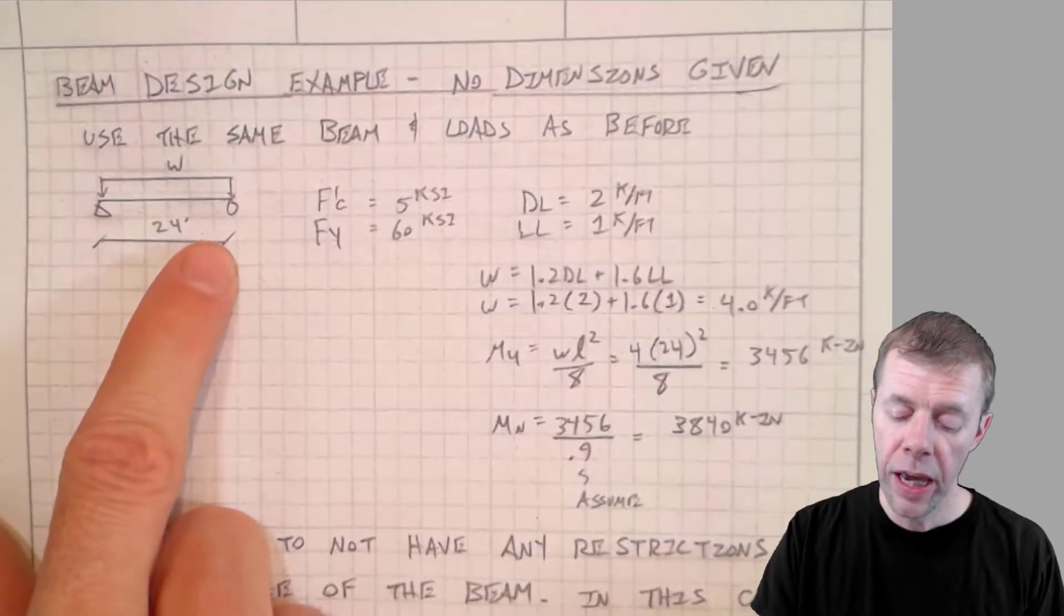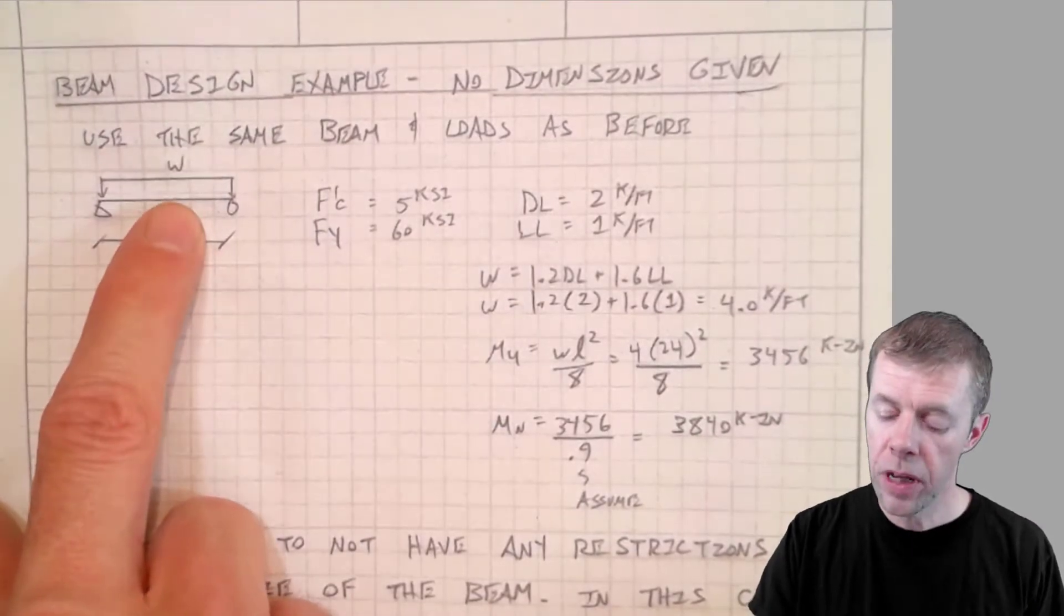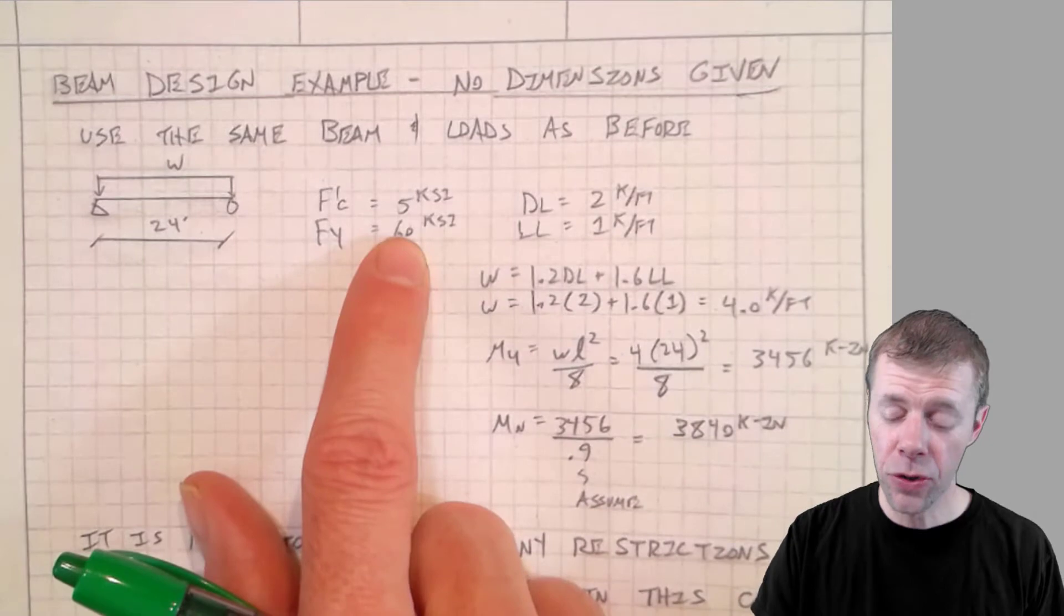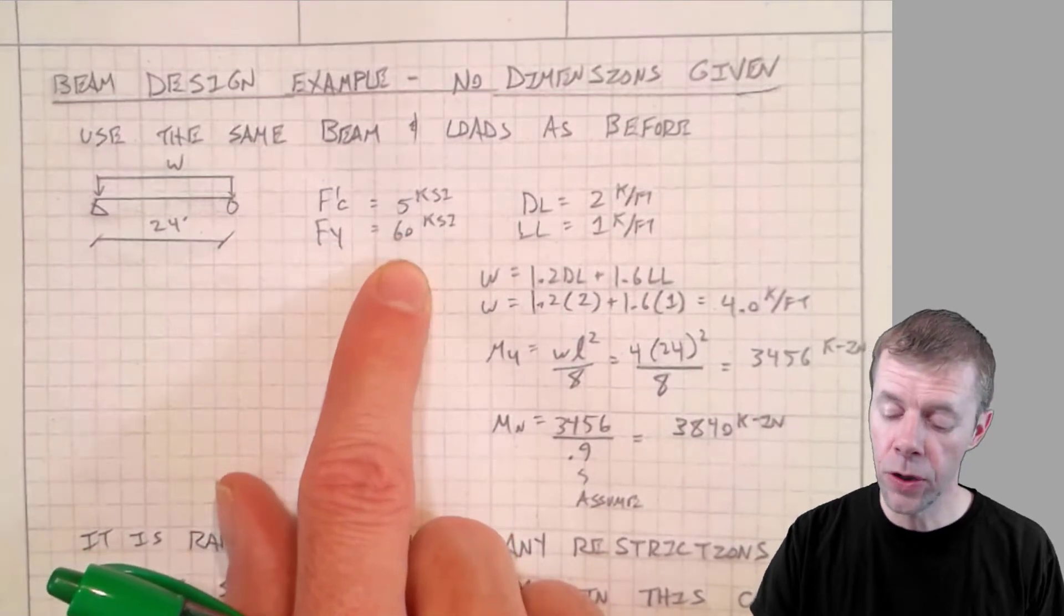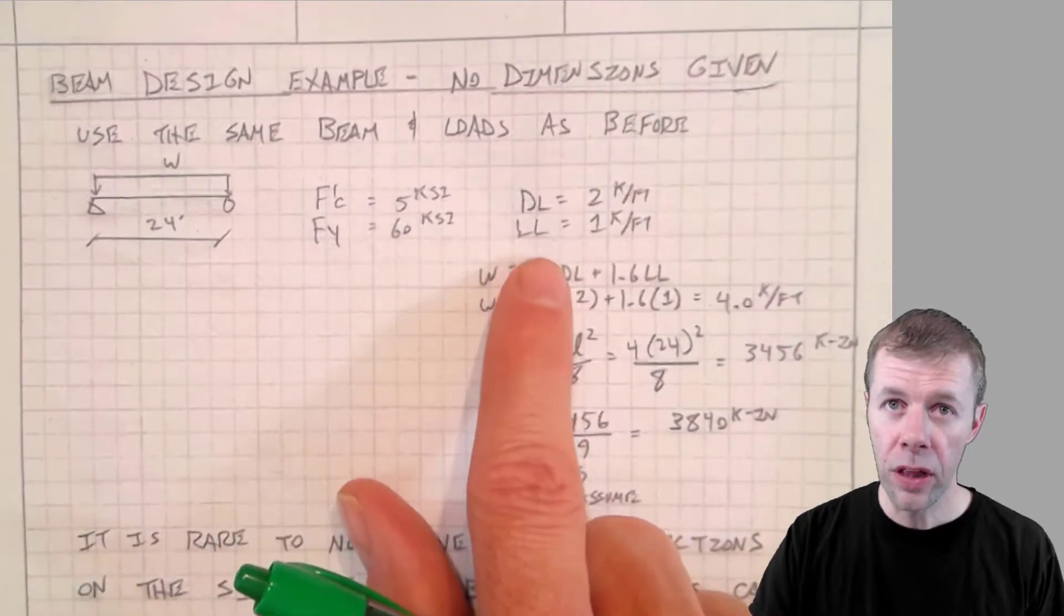We've got another simply supported beam. It's got a uniform load on it. Here's the concrete strength, here's the yield strength of the steel. There's the dead load, the live load.